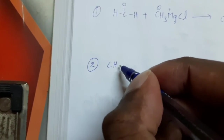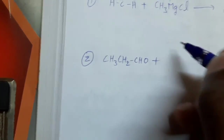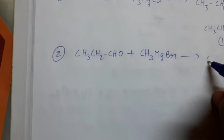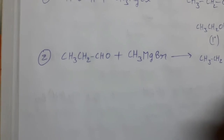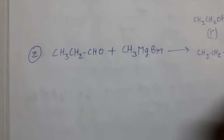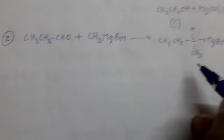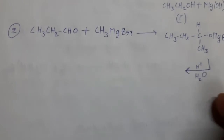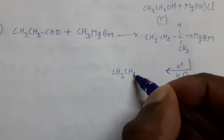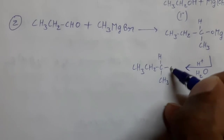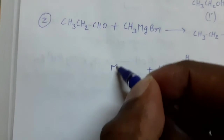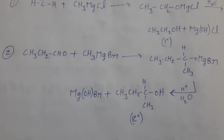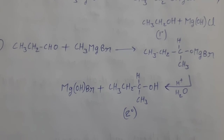For aldehydes other than formaldehyde — for example, propionaldehyde (CH₃CH₂CHO) — reacting with Grignard reagent CH₃MgCl (methyl magnesium bromide) gives the addition product CH₃CH₂CH(CH₃)OMgBr. On acidic hydrolysis, this yields the secondary alcohol CH₃CH₂CH(OH)CH₃ plus MgOHBr. So other aldehydes react with Grignard reagents to form secondary alcohols.